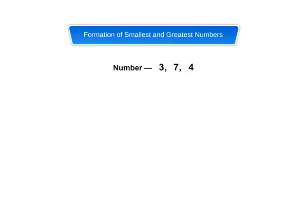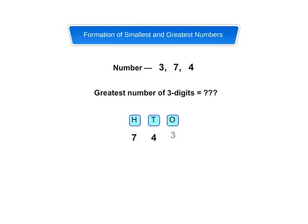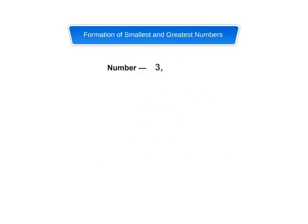If we want to form the greatest three-digit number using 3, 7, and 4 without repetition, then first we select the greatest digit and write it in the hundreds place. Then, we write the next smaller digit in the tens place and, lastly, the smallest digit in the ones place. So, the greatest three-digit number having 3, 7, and 4 is 743.